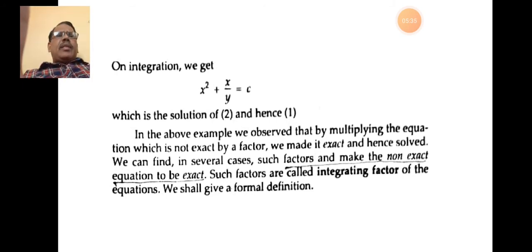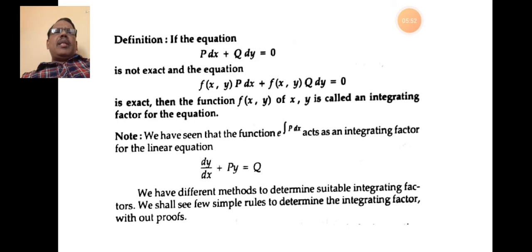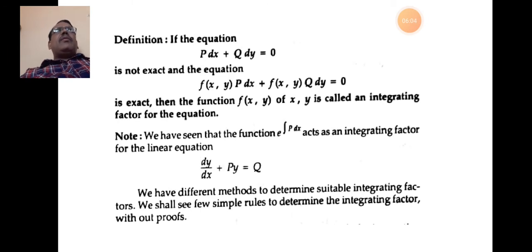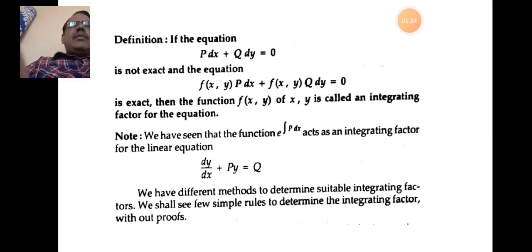How to find these integrating factors? If the equation M dx + N dy = 0 is not exact, and f(x,y)·M dx + f(x,y)·N dy = 0 is exact, then the multiplicating factor f(x,y) is called an integrating factor of the equation. We have seen that e^(∫P dx) is an integrating factor for the linear equation dy/dx + Py = 0. We have different methods to determine suitable integrating factors. We shall see a few example rules without proof.